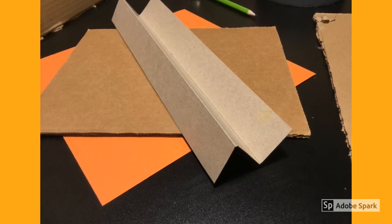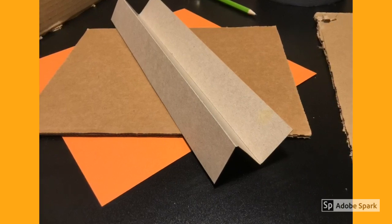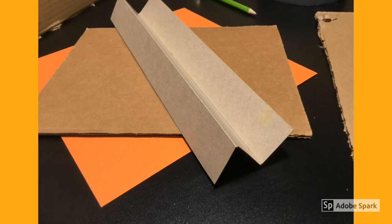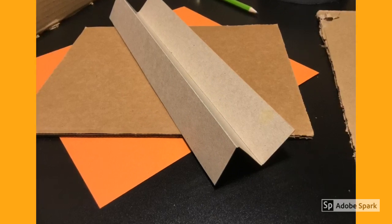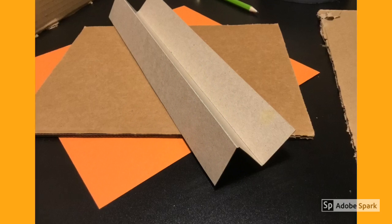Fold along the two remaining pencil lines to get this wavy shape. You may need to score the lines with the edge of your ruler so they're easier to fold. Once that's done, you now have your second type of ramp.